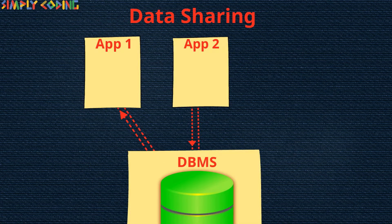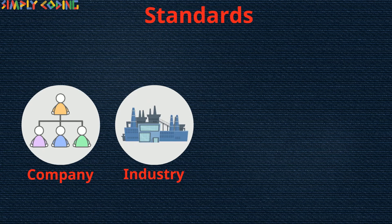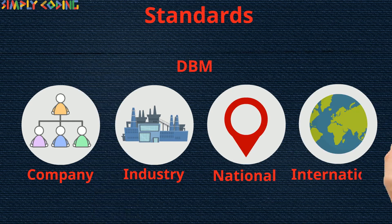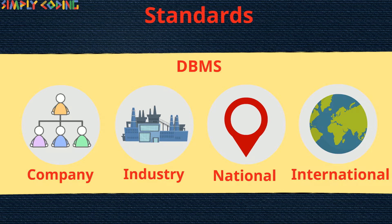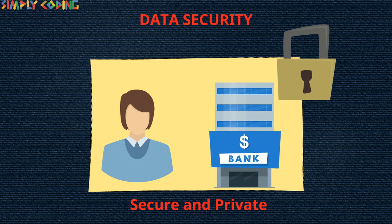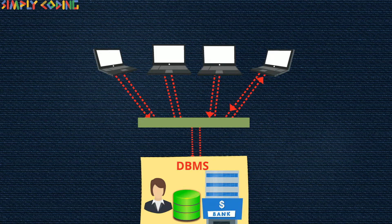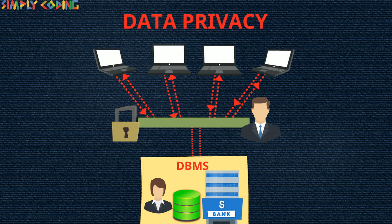DBMS makes sure that not only the existing applications can share the data in the database, but also that new applications can be developed to operate against the same stored data. There may be certain standards laid by the company, industry standards, or national-international standards which need to be followed. DBMS can ensure that all of the data follows the standards for storage and retrieval. The data and information of an organization or individual must be kept secure and private. DBMS ensures data security and privacy by ensuring that the only means of access to the database is through the proper channel and also by carrying out authorization checks whenever access to sensitive data is attempted.